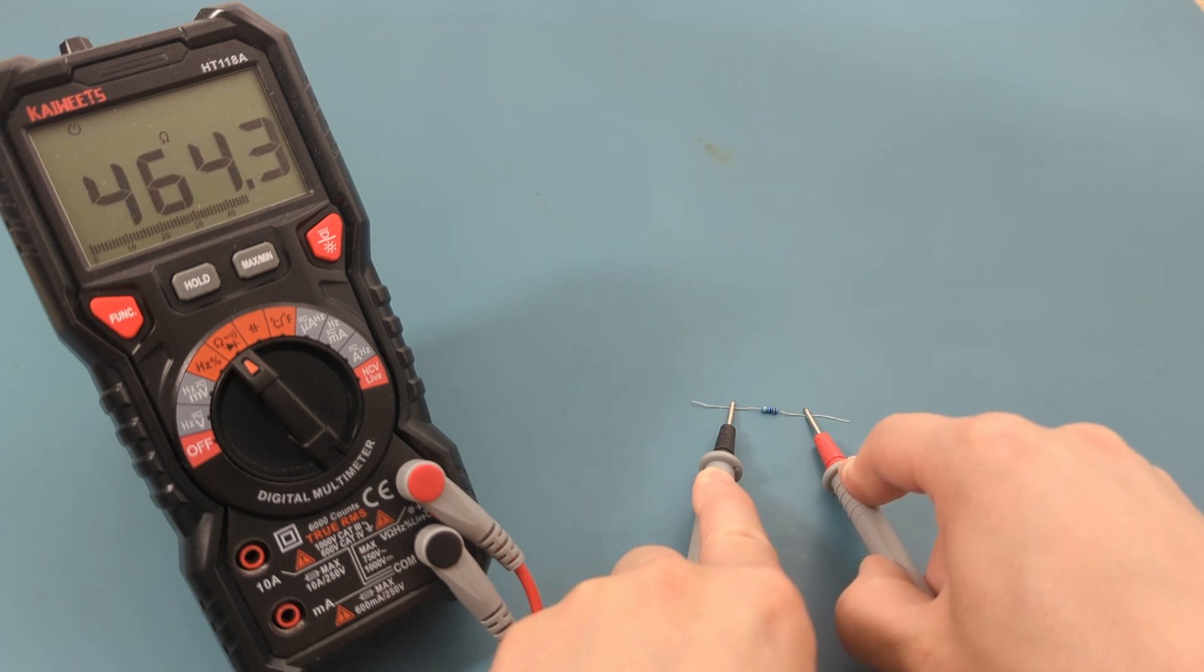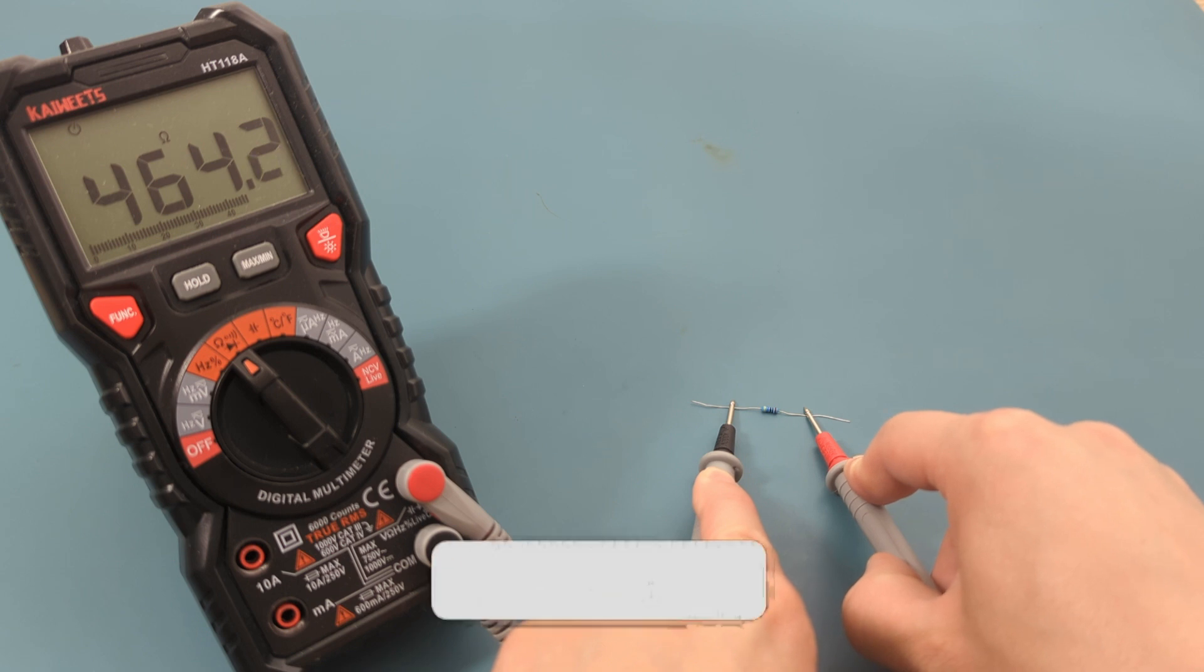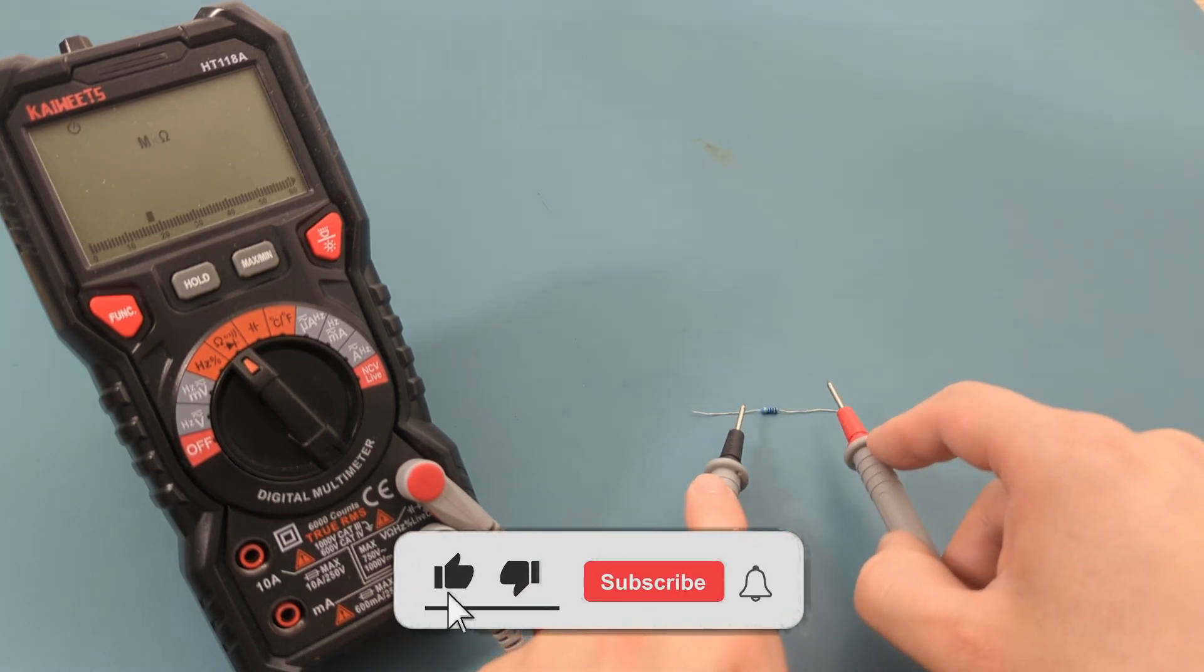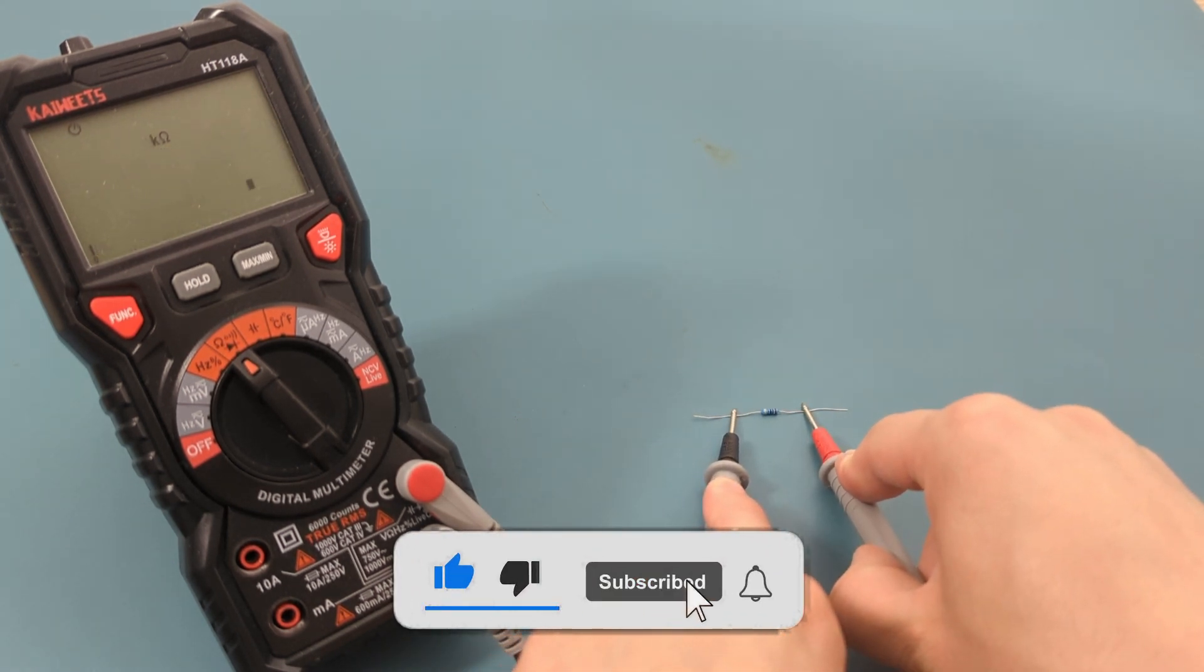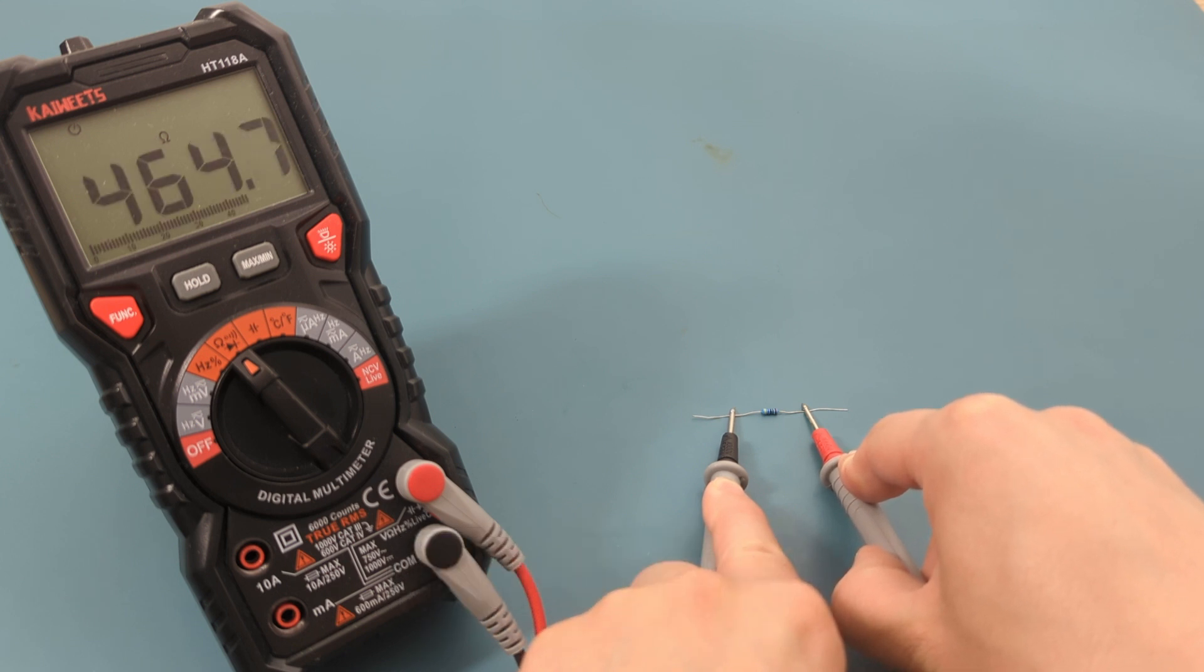I hope this video has explained what the color stripes on a resistor mean. If you found this video helpful, give it a thumbs up, consider subscribing for more electronics tips and tutorials, and hit the bell icon to never miss an update. Thanks for watching, and I'll see you in the next video.